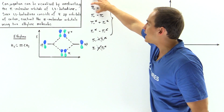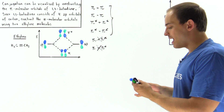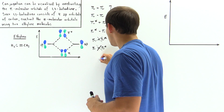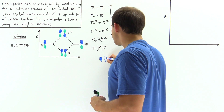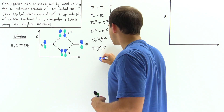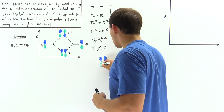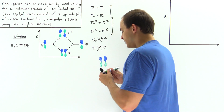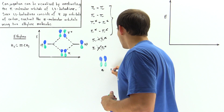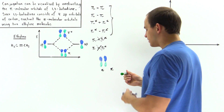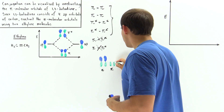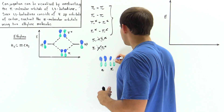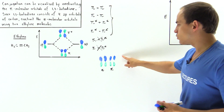Let's begin by combining positive pi with positive pi. The pi orbital has blue regions on top representing the positive sign and green regions on the bottom representing the negative sign. Combining two identical pi orbitals — where all blues align and all greens align — produces the first molecular orbital of 1,3-butadiene, which has zero nodes and is the lowest in energy.